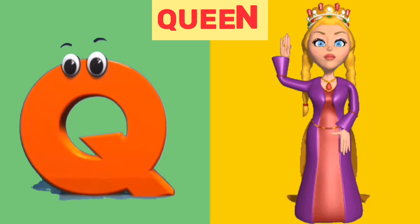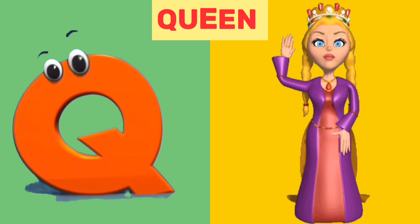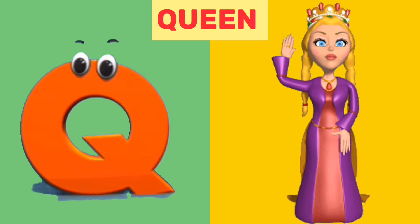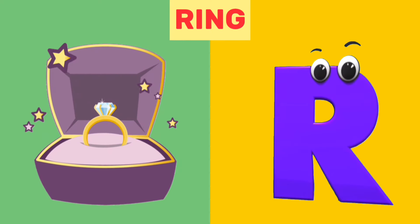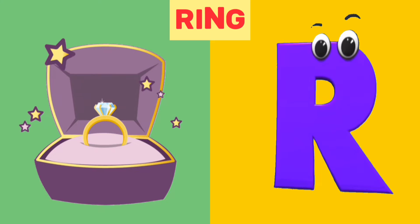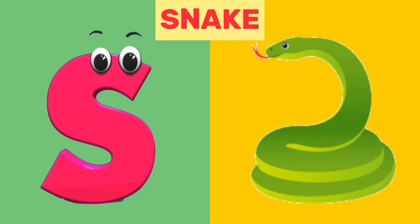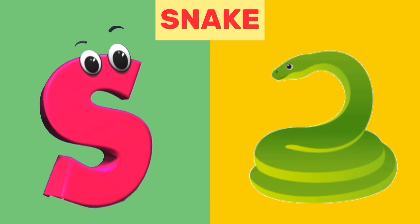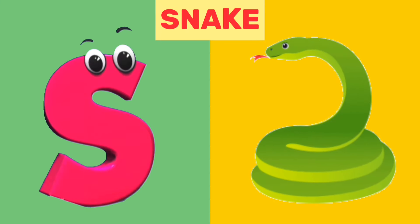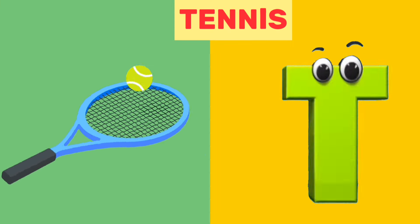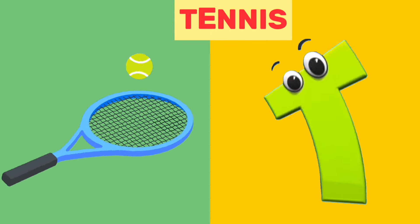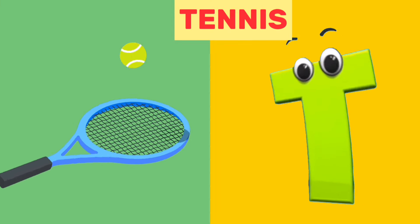Q is for Queen. Qu, Qu. Queen. R is for Ring. R, R. Ring. S is for Snake. S, S. Snake. T is for Tennis. T, T. Tennis.